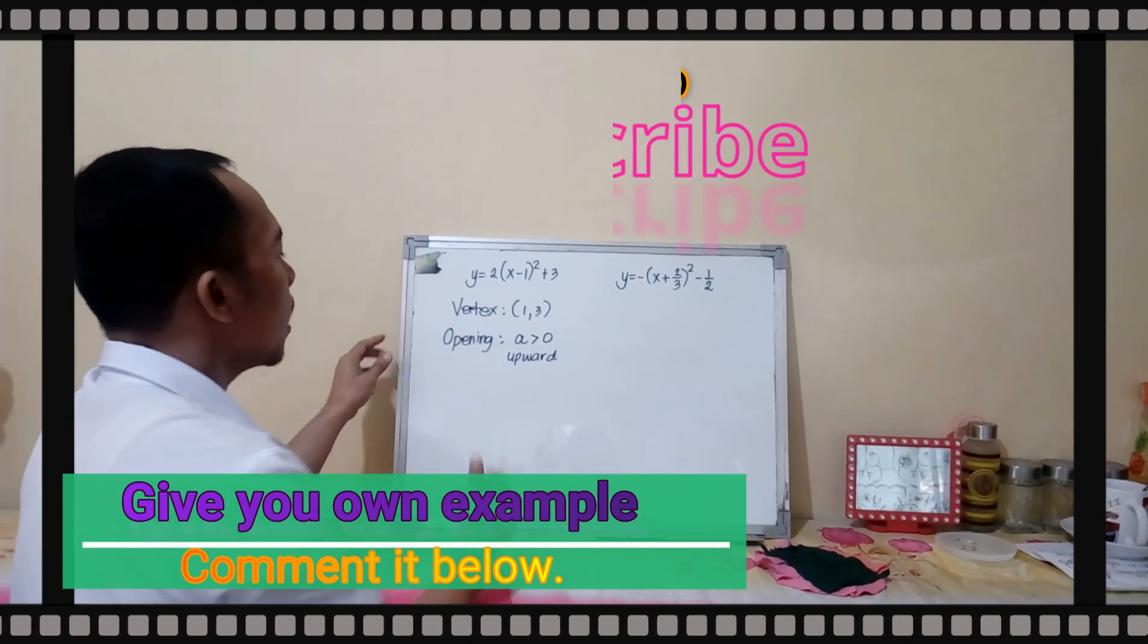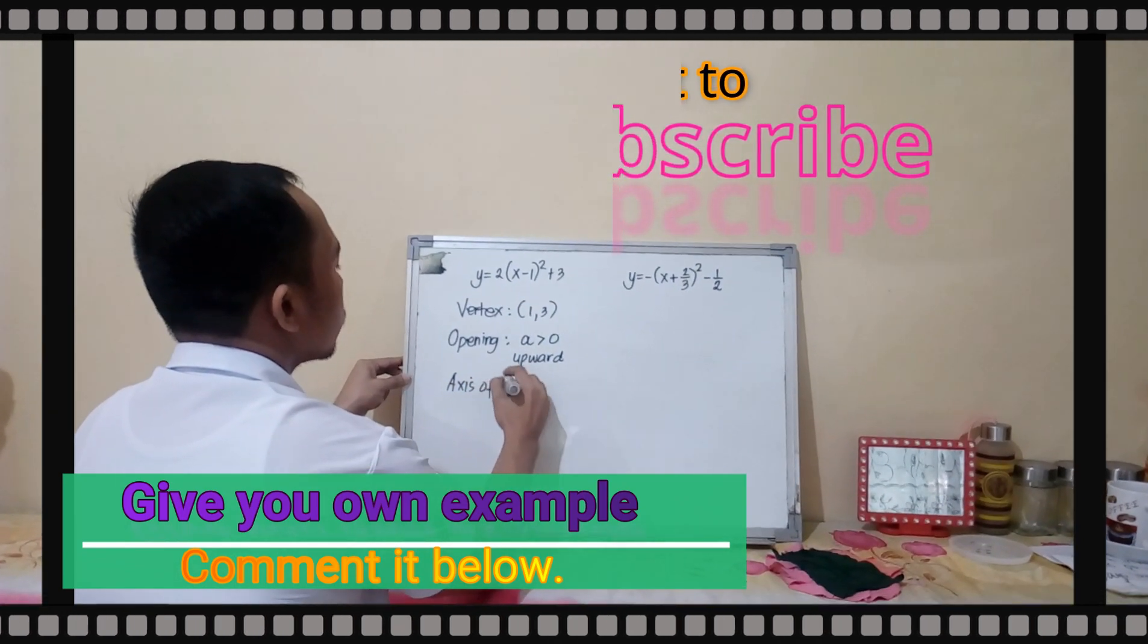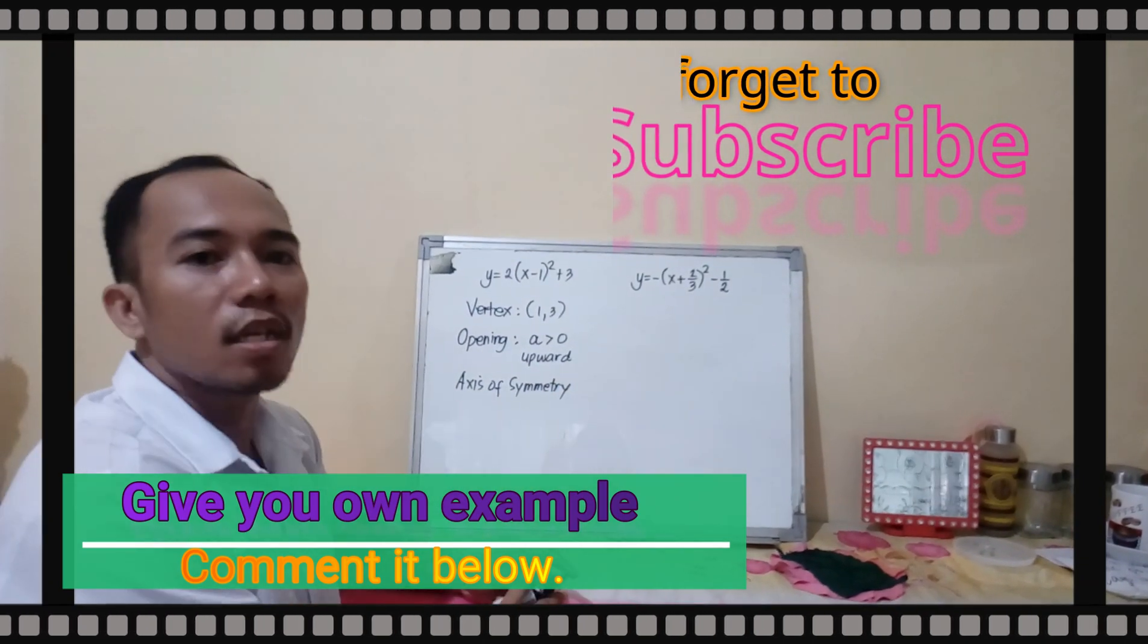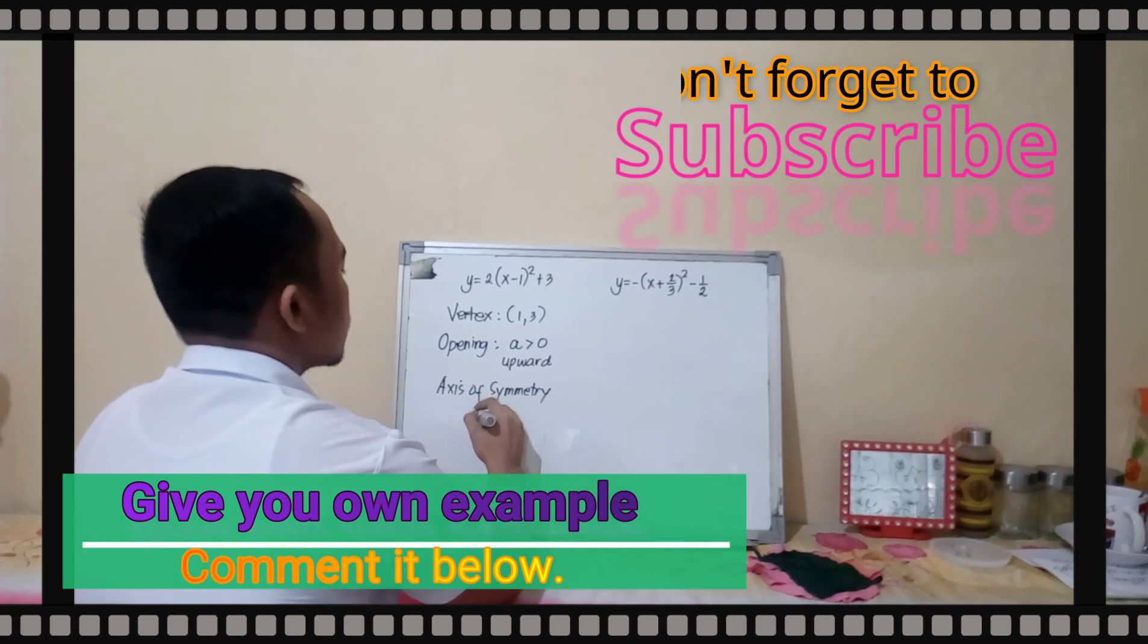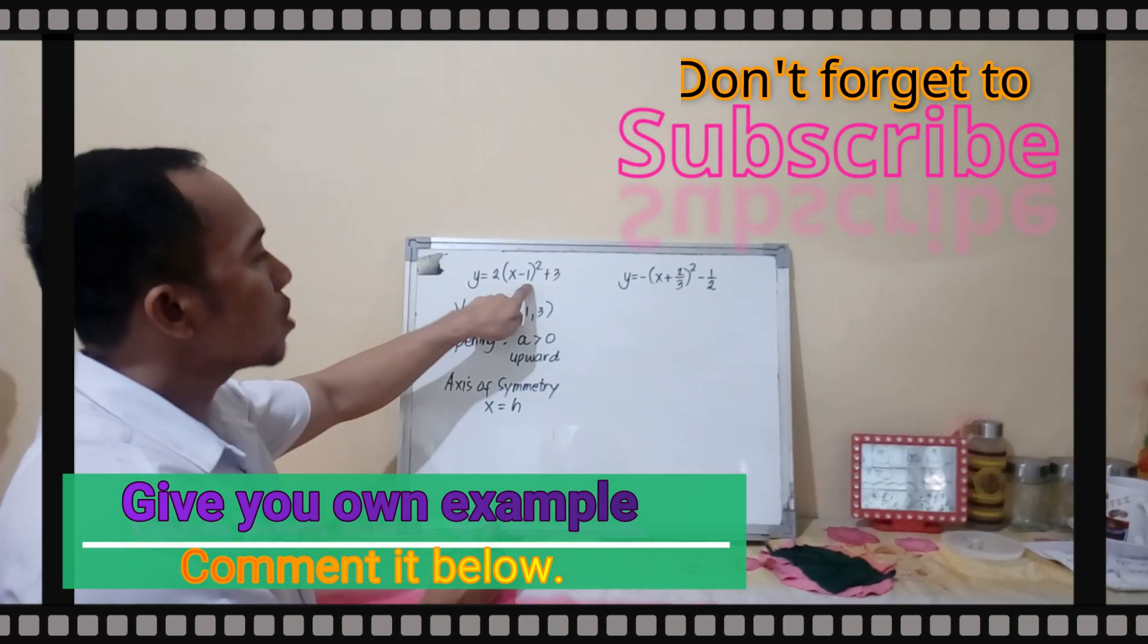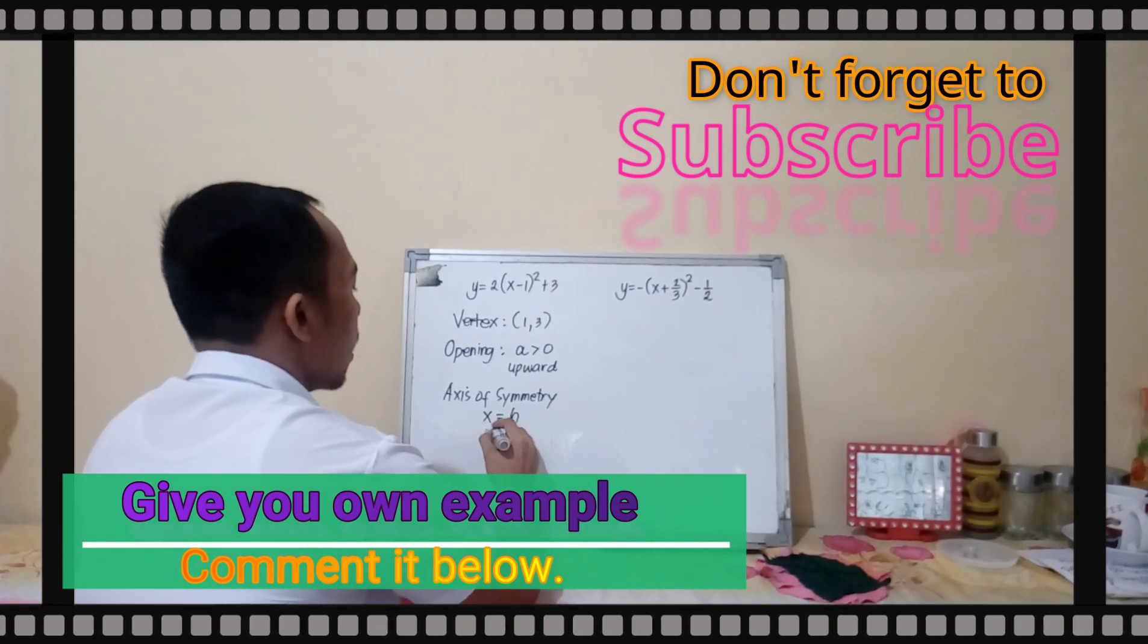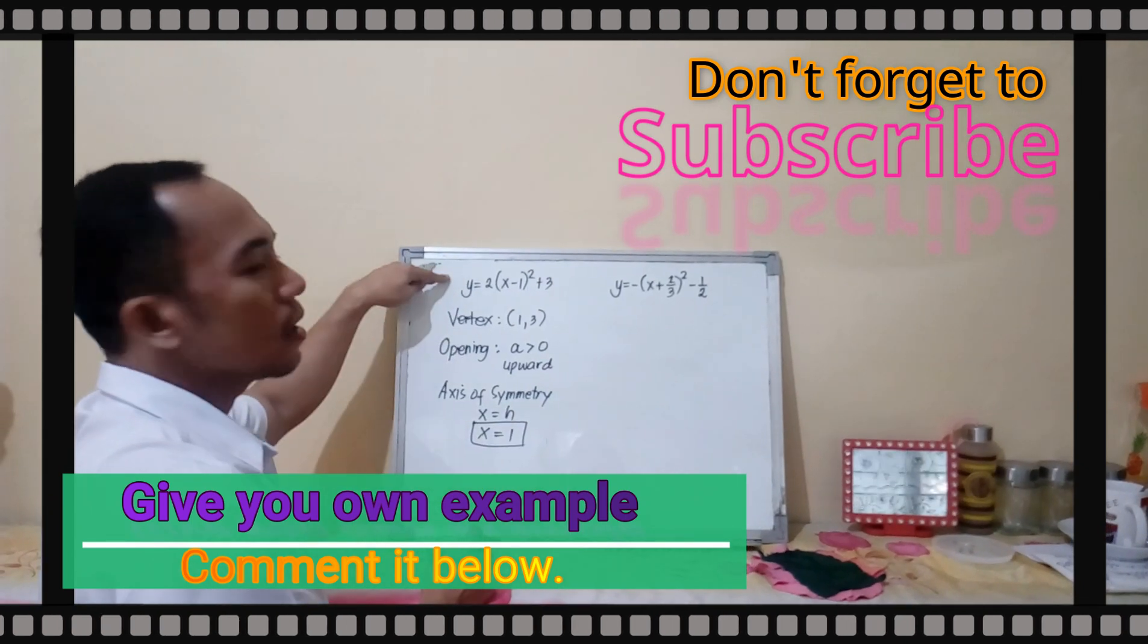Next is, you can also get the axis of symmetry. Axis of symmetry is equal to x equals h. Here, you have your h as 1. Therefore, your axis of symmetry is x equals 1 for this quadratic function.